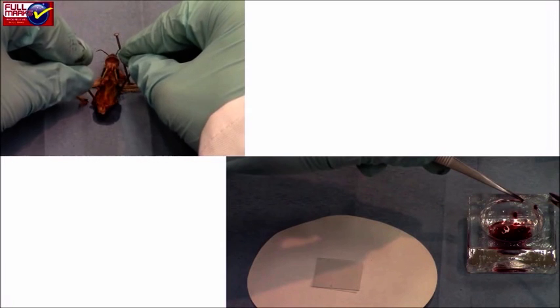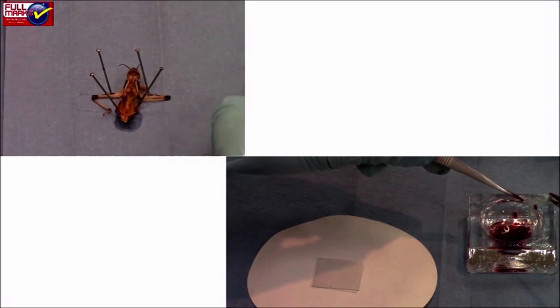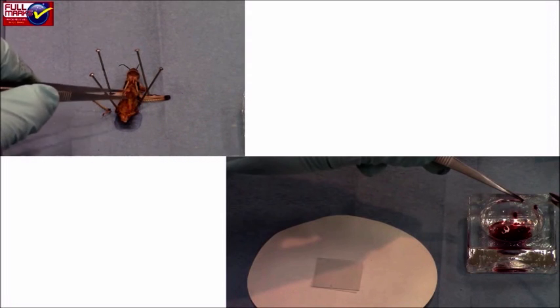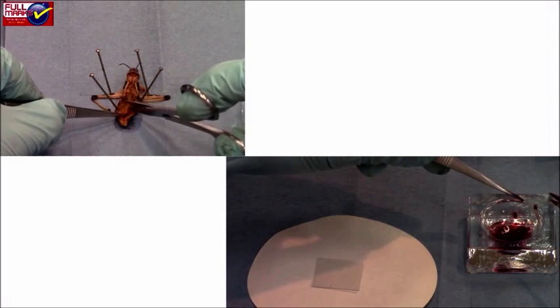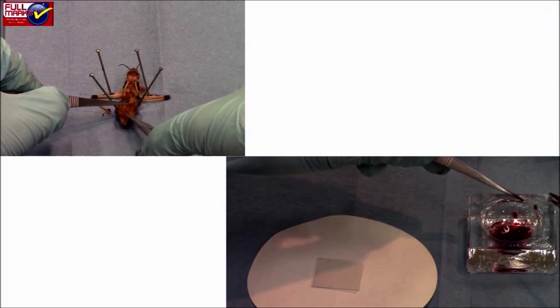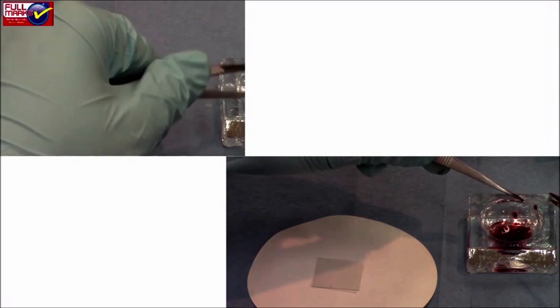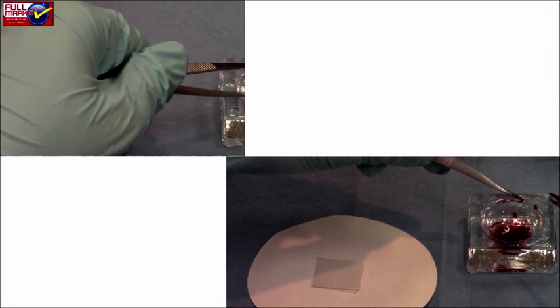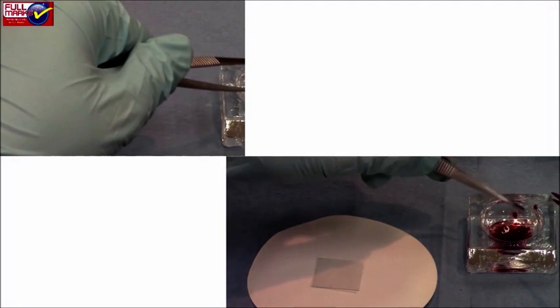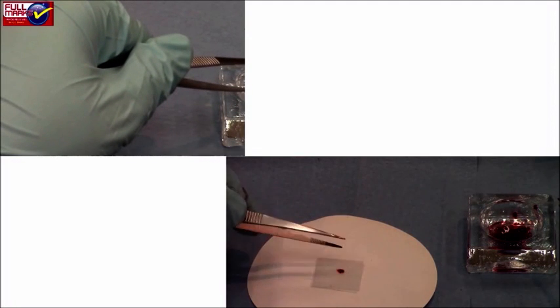The testis of the grasshopper are removed and fixed in Carnoy's fluid. After 2 to 14 hours, the testis were transferred to 10% alcohol and stored in Carnoy's fluid. After 3 to 15 minutes, make squash preparation. One or two lobes of the testis are removed.